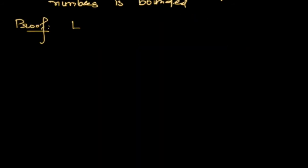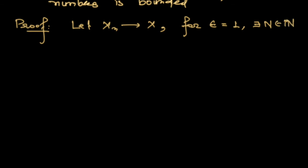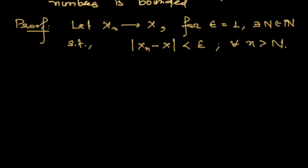Let x_n be a sequence of real numbers which converges to x. By definition, for all epsilon, there exists a natural number N such that |x_n - x| < epsilon for all n > N. Choosing epsilon equal to 1, we get a natural number N such that |x_n - x| < 1 for all n > N. We can further write this as |x_n| ≤ |x| + 1.